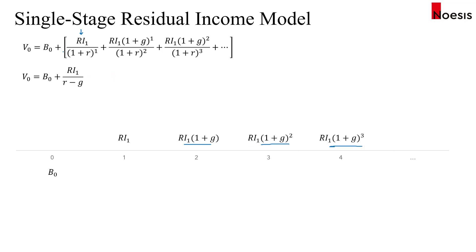We can summarize this series as RI1 — the residual income in year one — divided by R minus G. This is a very convenient formula to summarize all these present values.